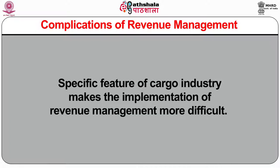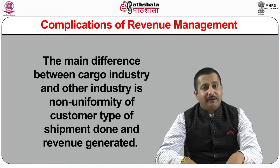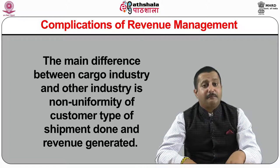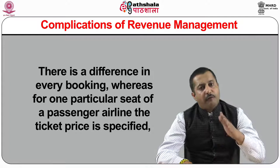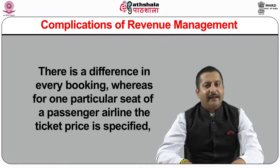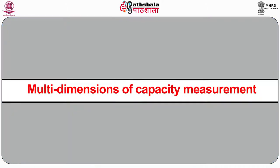Complications of revenue management: specific features of the cargo industry make implementation of revenue management more difficult. The main difference between the cargo industry and others is the non-uniformity of customer type, shipment done, and revenue generated — there is a difference in every booking. Whereas for a passenger airline seat the ticket price is specified, and for a hotel room booking is always at a certain price for a certain number of nights, all this is not possible in air cargo with certainty.